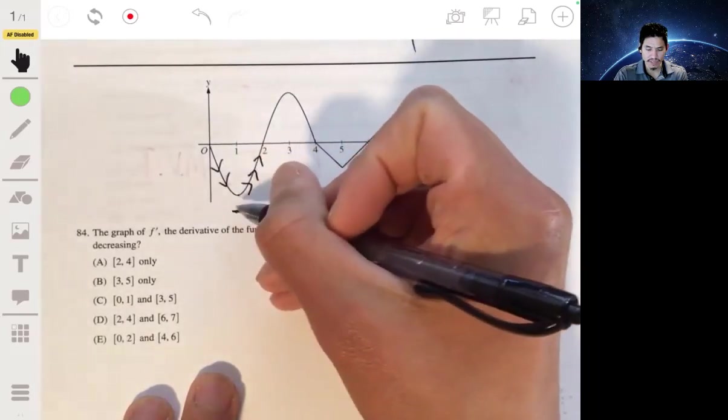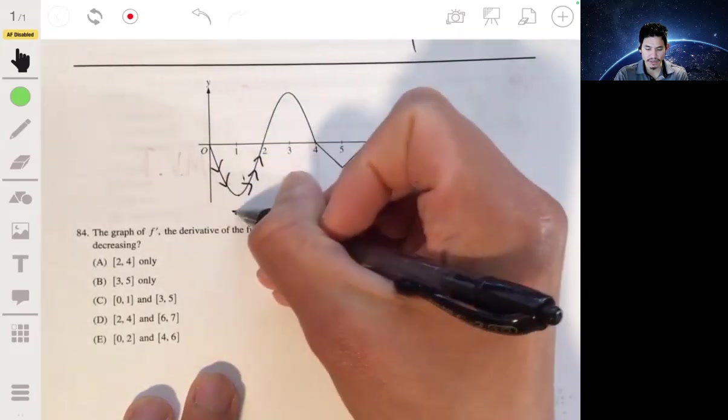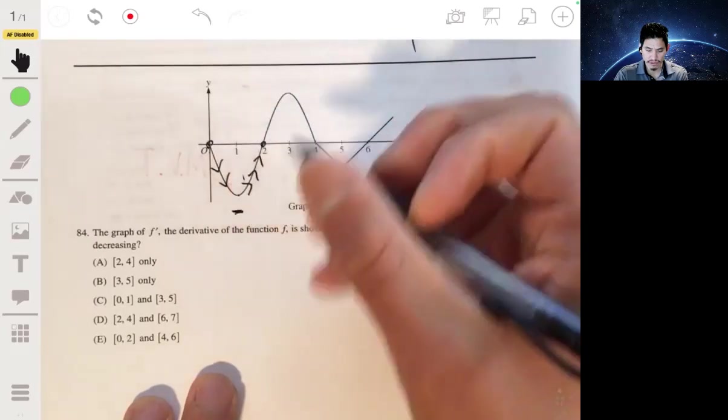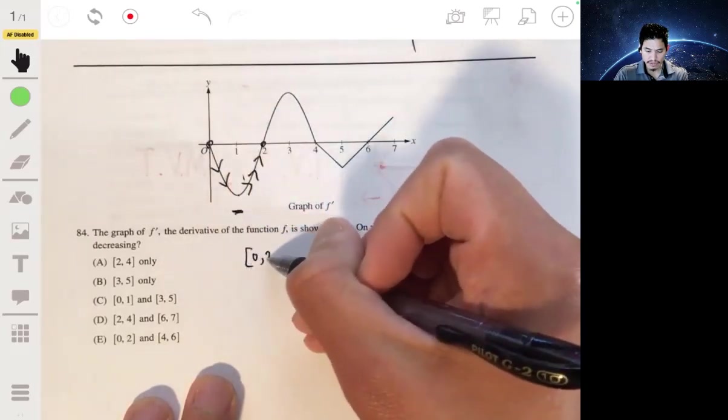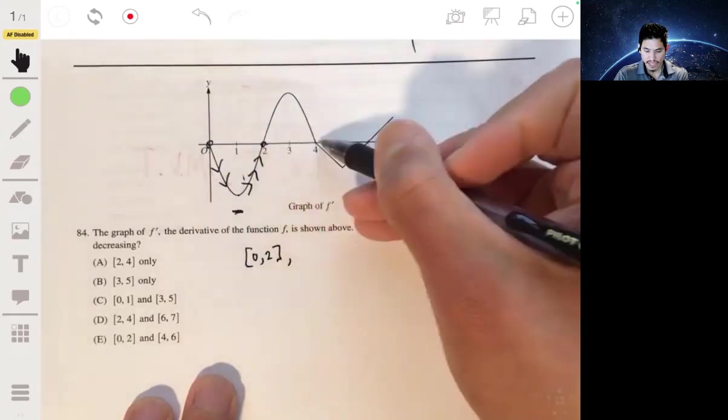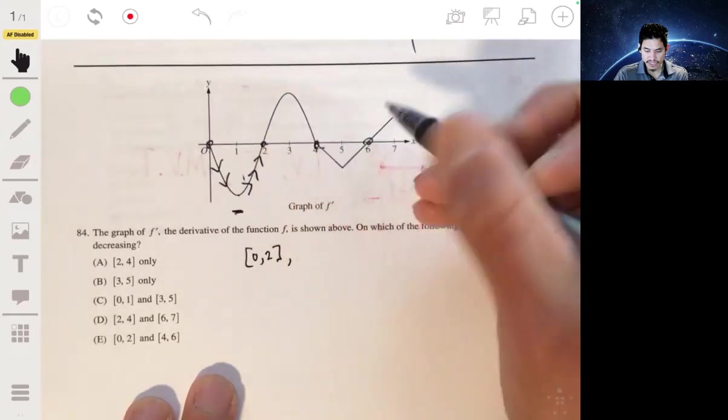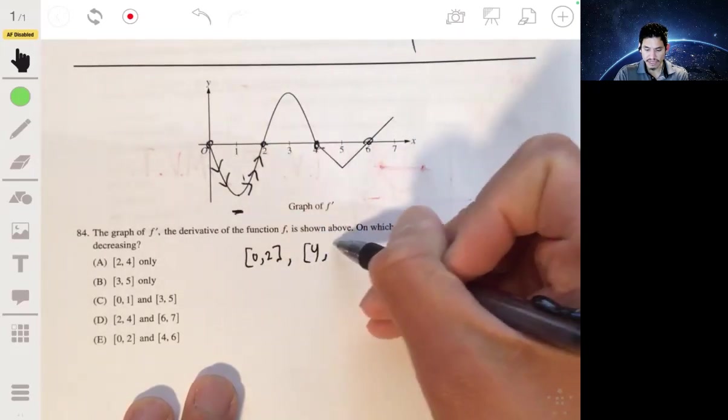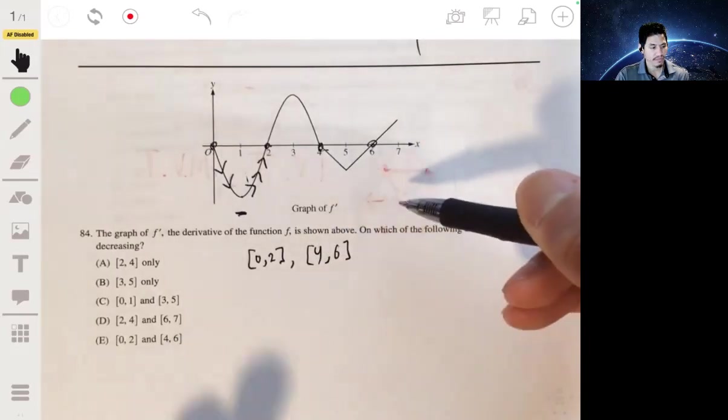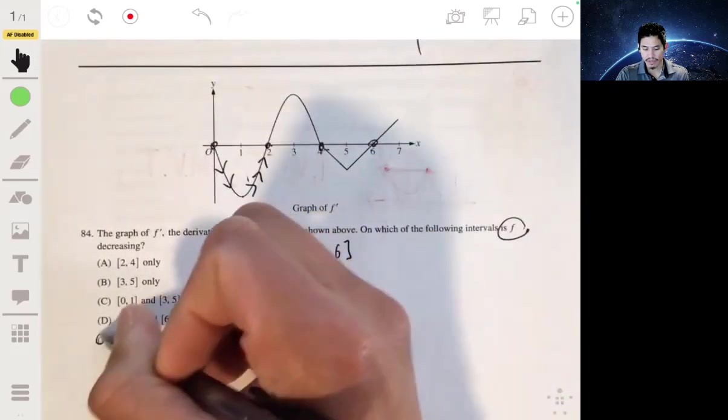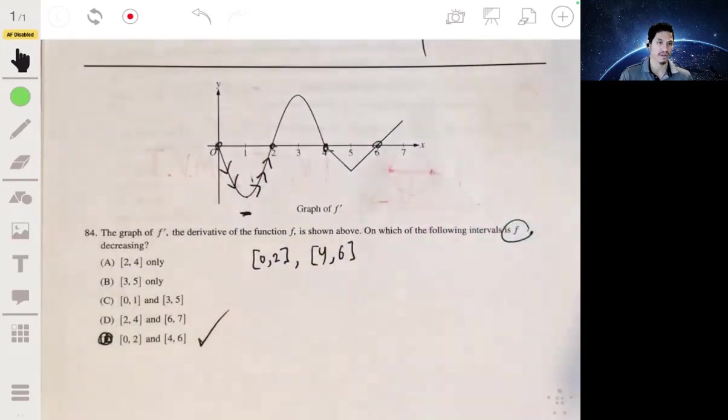It's decreasing on this interval from 0 to 2 because the derivative is negative, and then decreasing from 4 to 6 because the derivative is negative there too. So our answer will be E. That's all there is to it.